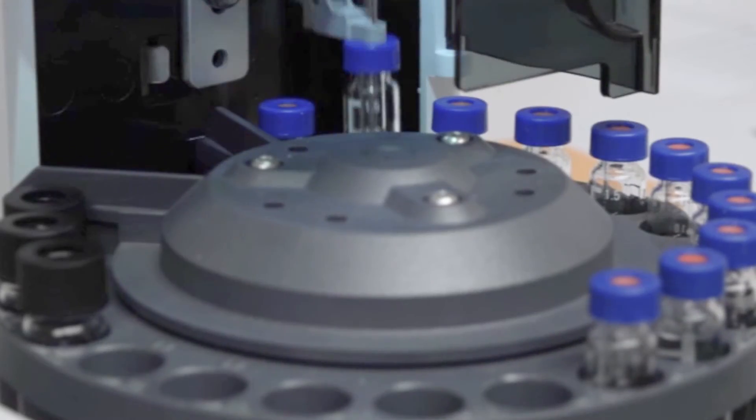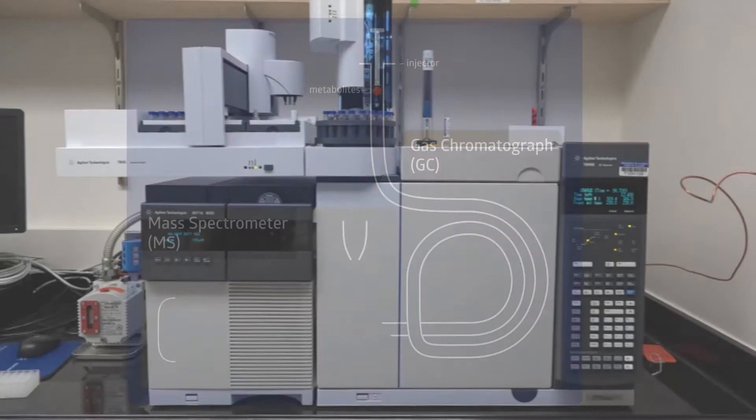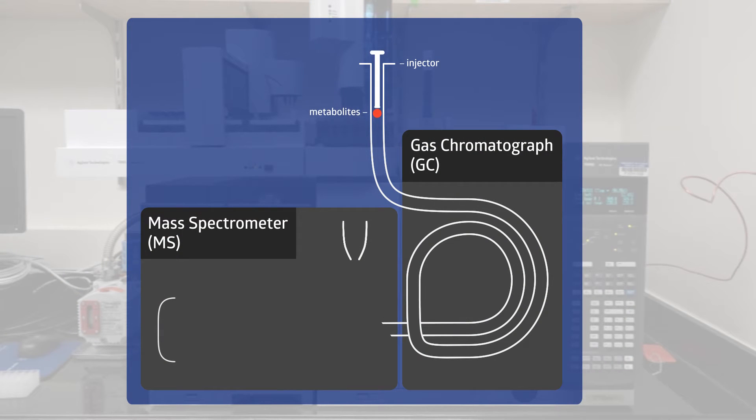So first our samples are going to get injected and enter the GC, which is going to separate out the different metabolites that are in the mix within the sample. Then as those compounds come off of the GC, they're going to enter the MS.